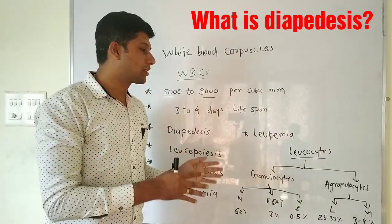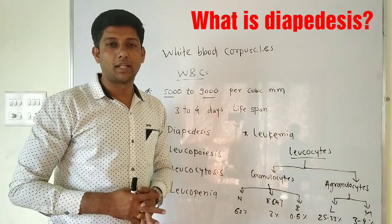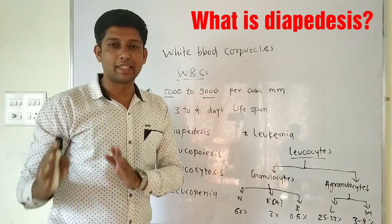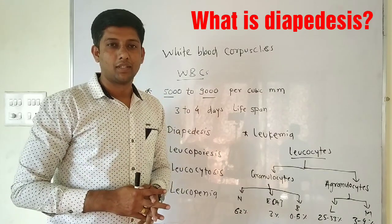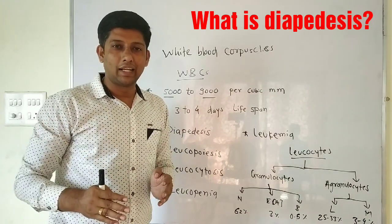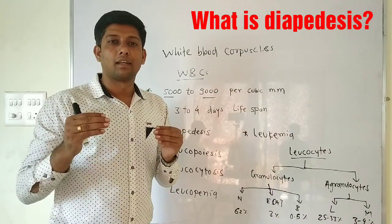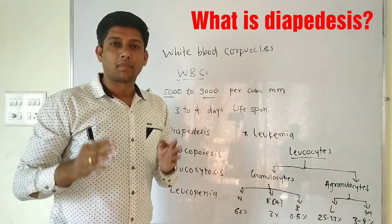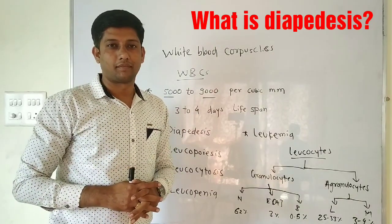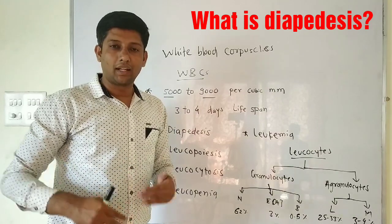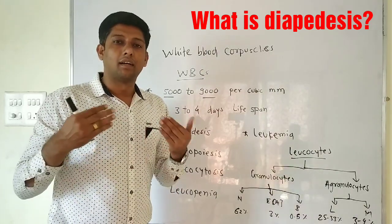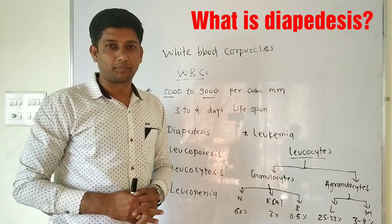The word leukocyte is derived from two words: leucose means white and cytose means cell. WBCs are colorless, amoeboid, nucleated cells. They are particularly phagocytic in nature and are defense cells of our body.